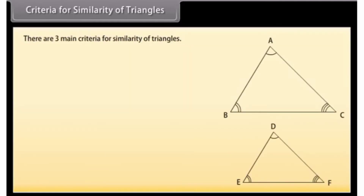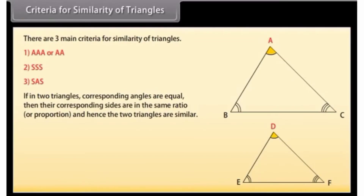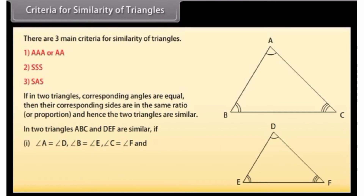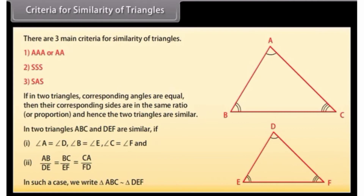Criteria for similarity of triangles. There are three main criteria: 1. AAA (or AA), 2. SSS, 3. SAS. If in two triangles the corresponding angles are equal, then their corresponding sides are proportional and hence the triangles are similar. In triangles ABC and DEF: angle A = angle D, angle B = angle E, angle C = angle F, and AB/DE = BC/EF = CA/FD. In such a case, triangle ABC is similar to triangle DEF.